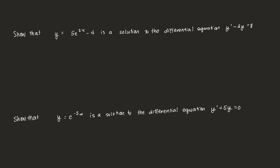Show that the function y = 5e^(2x) - 4 is a solution to the differential equation y' - 2y = 8. We first find y prime: using the chain rule for exponentials, that's 5 × 2 = 10, so y' = 10e^(2x). We then substitute into y' - 2y = 8: 10e^(2x) - 2(5e^(2x) - 4) = 8.